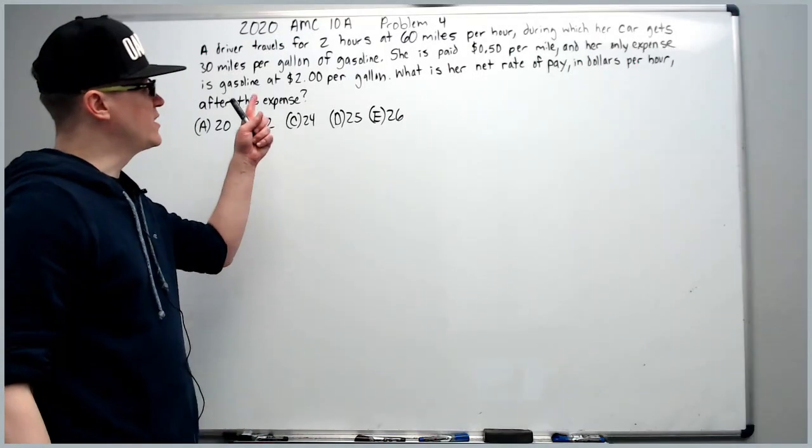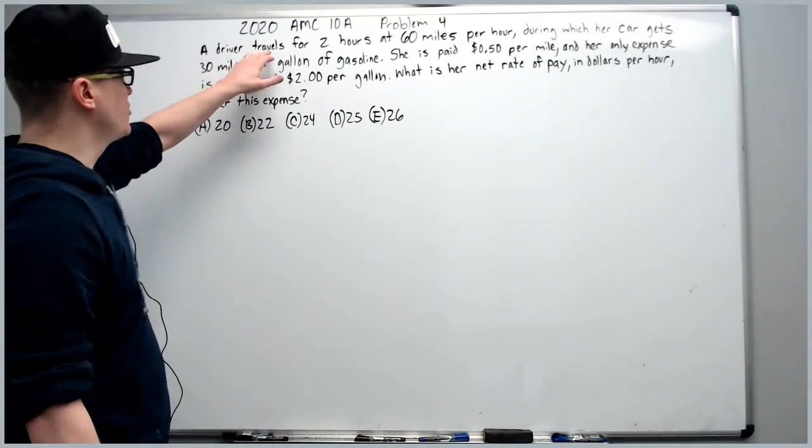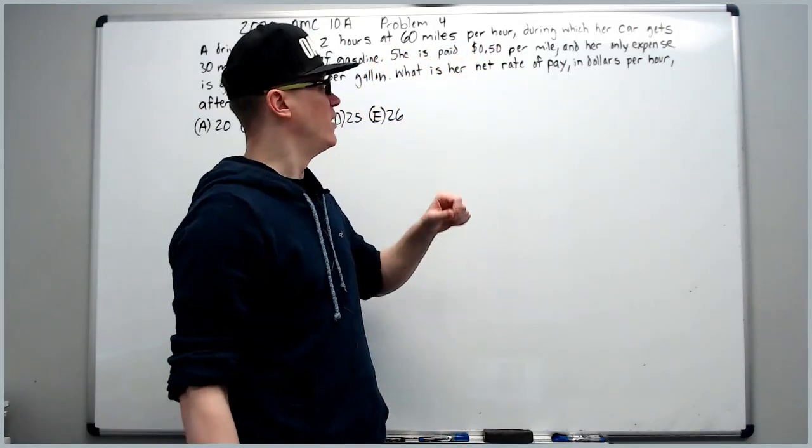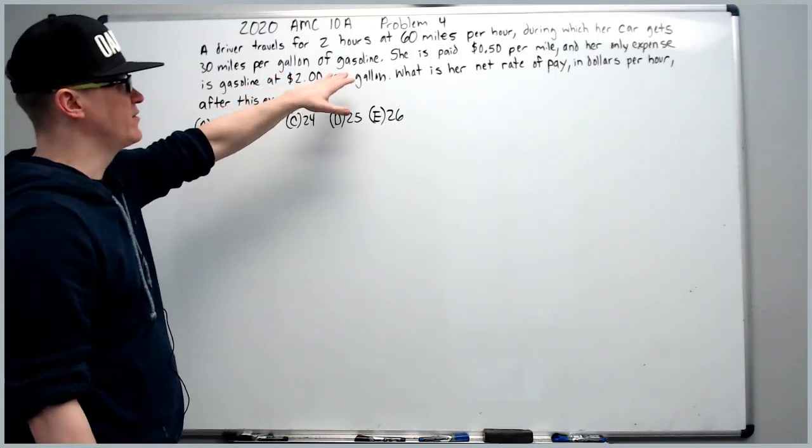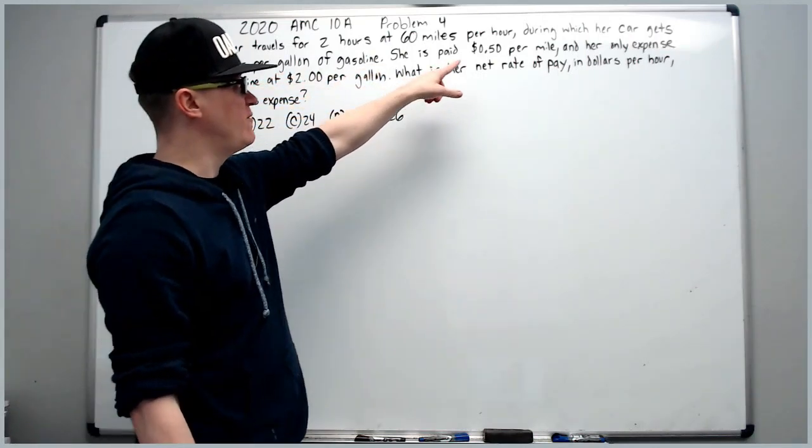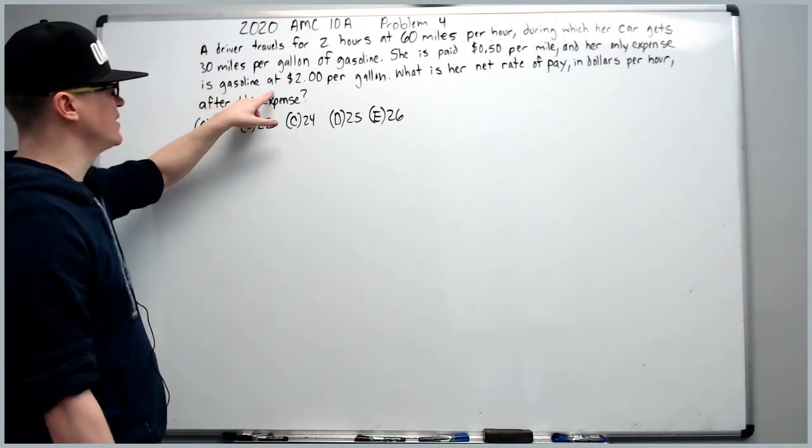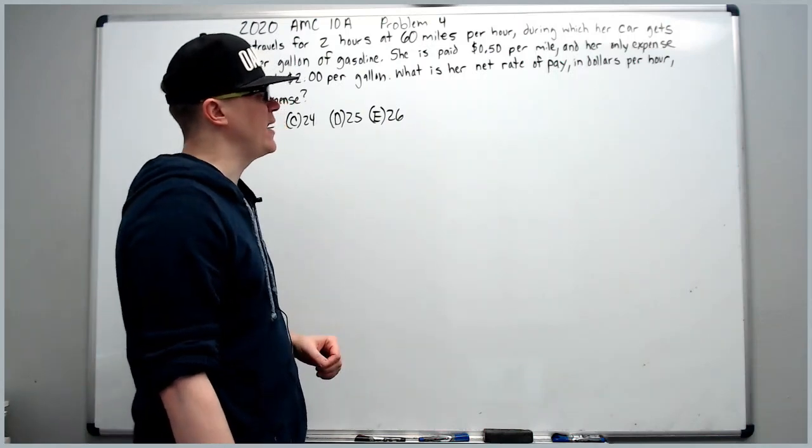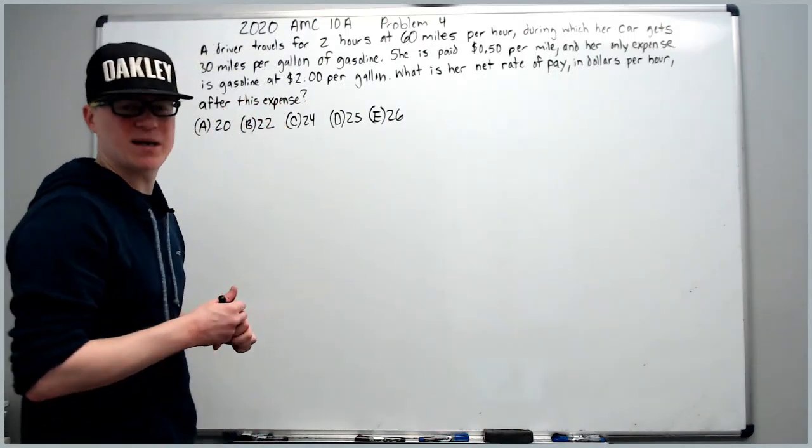Now on the 2020 10A problem number four, a driver travels for two hours at 60 miles per hour, during which her car gets 30 miles per gallon of gas. She is paid 50 cents per mile, and her only expense is gasoline at $2 per gallon. What is her net rate of pay in dollars per hour after this expense?